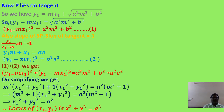In this proof we used two conditions: substituting (x₁, y₁) on the tangent equation, and taking the product of slopes equal to −1. Now let us see the next property.